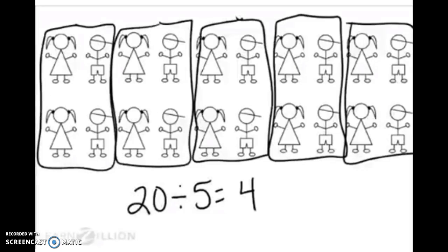If we look at this problem, we would see that we take our whole group of 20 students and we break them up into five groups and I see that each group has 1, 2, 3, 4 students. So I can say that 20 divided by 5 is equal to 4.